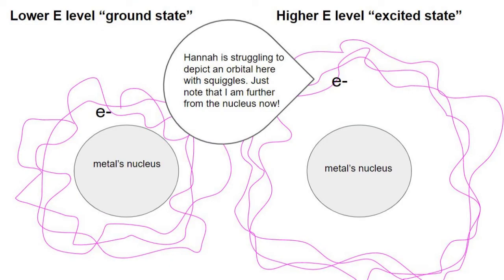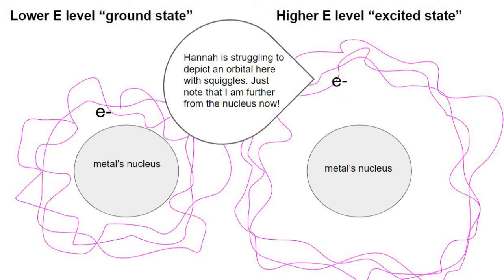The heat produced during combustion moves electrons in these metals to higher energy levels called excited states. When the metals relax the electrons fall to their original positions known as their ground states, releasing the energy as light.